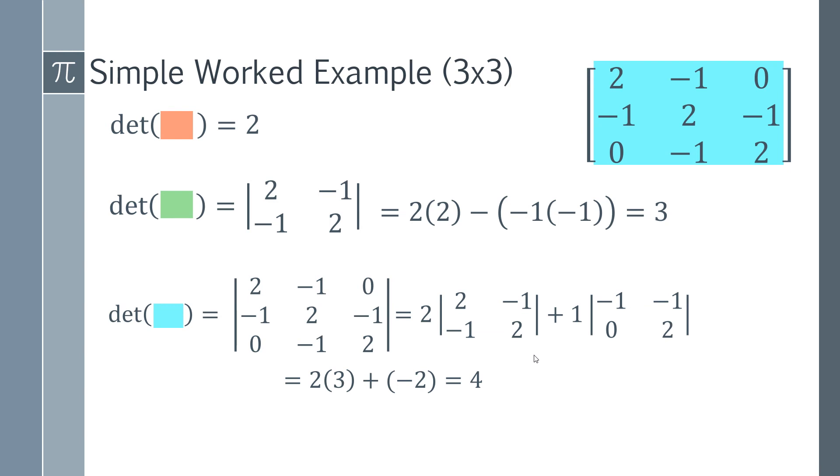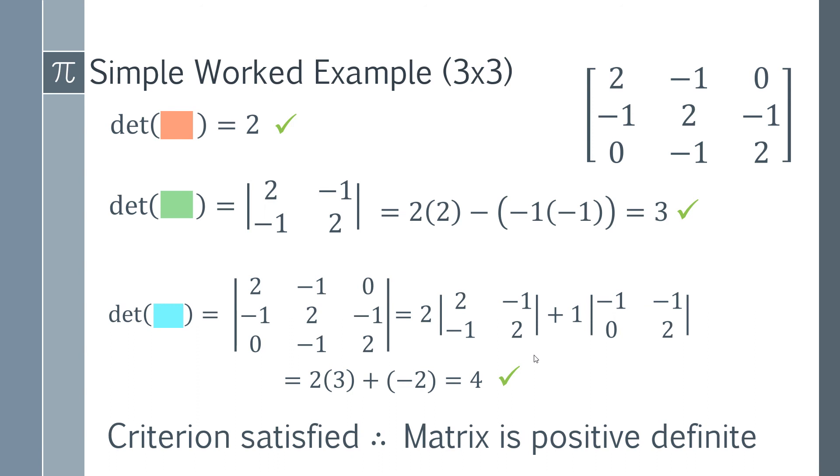And so if we go back through each of these determinants, you can see that the first one is positive, the second one is positive, and the third one is positive. So in every case, we have positive determinants. Therefore, we've satisfied Sylvester's criterion and we can conclude that the matrix is positive definite.